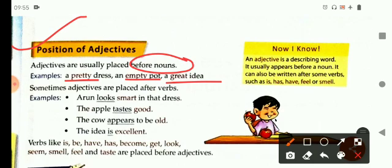Some adjectives are placed after verbs also. Arun looks smart in that dress. Here, looks is a verb and smart is an adjective that is placed after verbs. Similarly, the apple tastes good. The cow appears to be old. The idea is excellent. In these sentences, adjectives are placed after verbs.